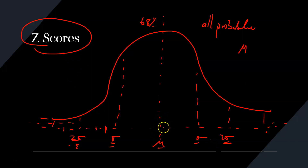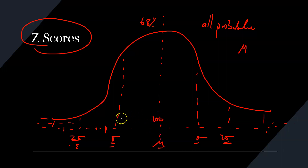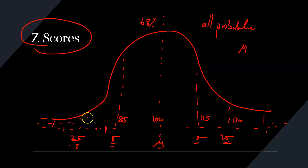For example, if you have a mean of 100 and a standard deviation of 15, then one standard deviation below the mean would be 85, one above would be 115, two above would be 130, two below would be 70, three above would be 145, and three below would be 185.